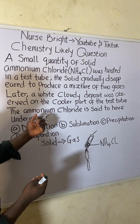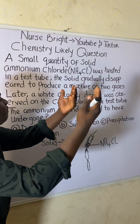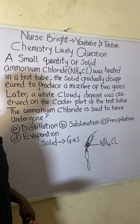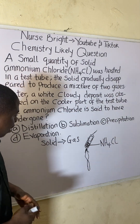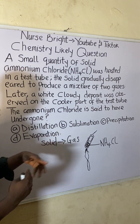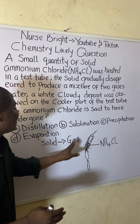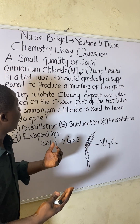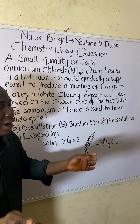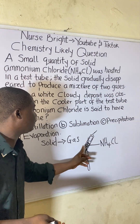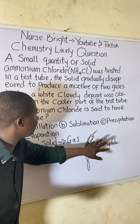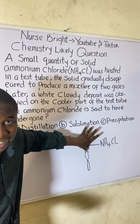Later, a white cloudy deposit was observed on the cooler part of the test tube. After the gas was formed, a white solid deposit was found on the cooler part of the test tube.